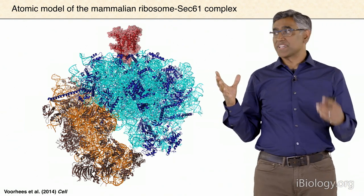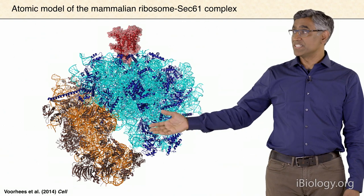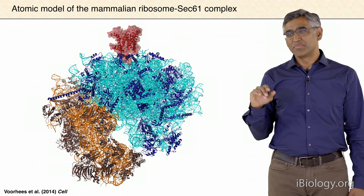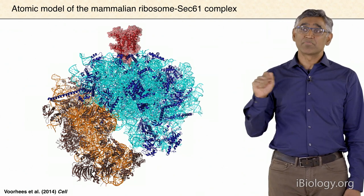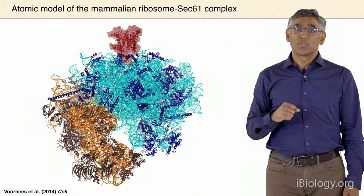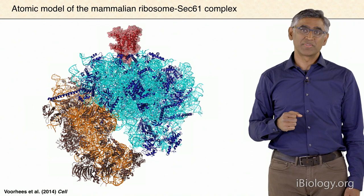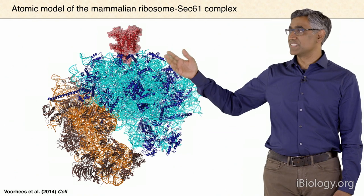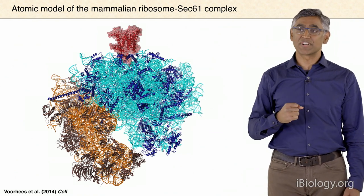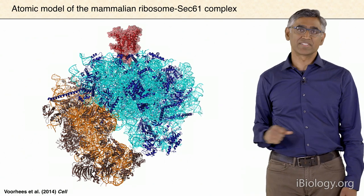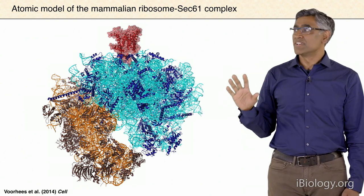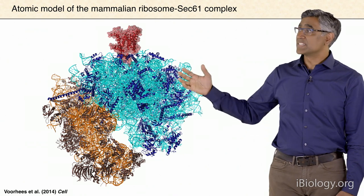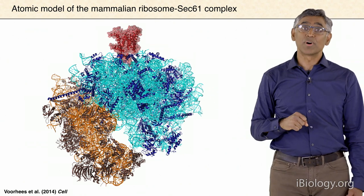If you look in the ribosome itself, the resolution was absolutely stunning—the side chains of different parts of the ribosome are easily fitted into the density. Israel worked with Rebecca to build an atomic model of the ribosome, which turned out to be the first very high-resolution atomic model of the mammalian ribosome. It turns out this ribosome-SEC61 complex was primarily empty—not actually translating anything—likely because the sample used was from microsomes I made when I was a student about 20 years ago.